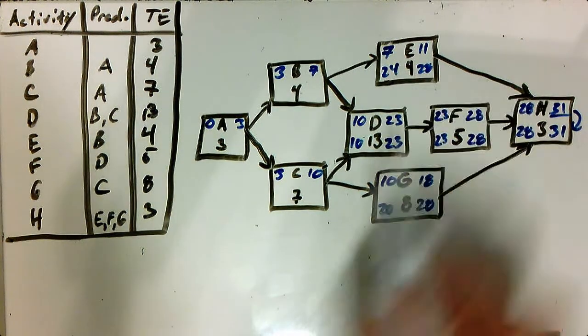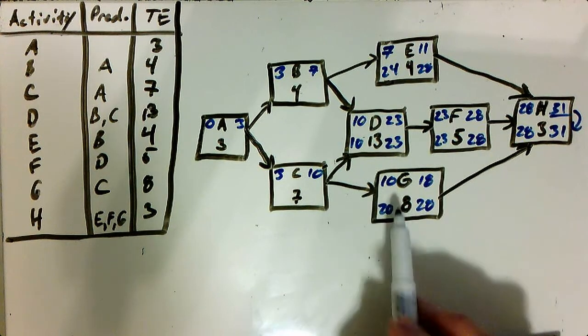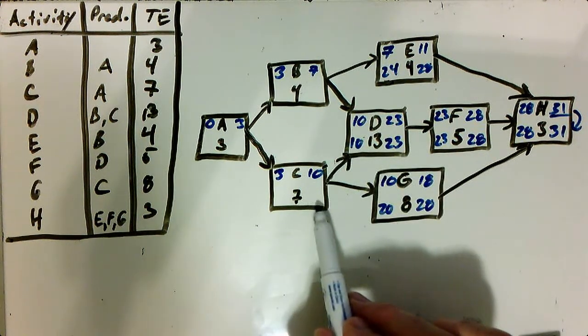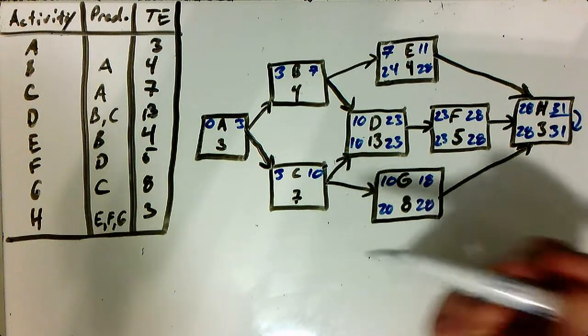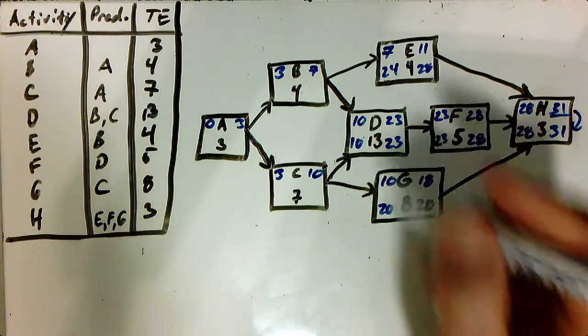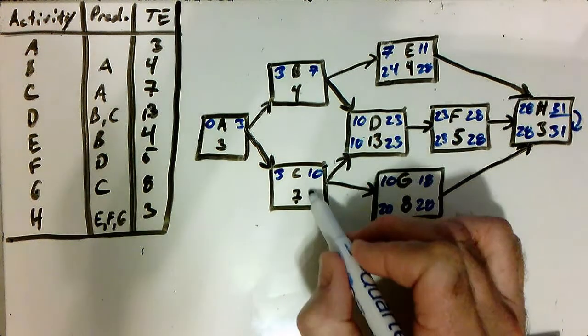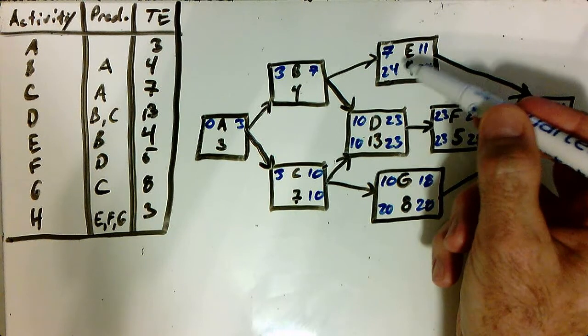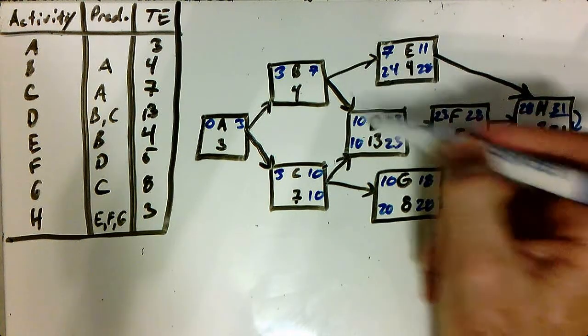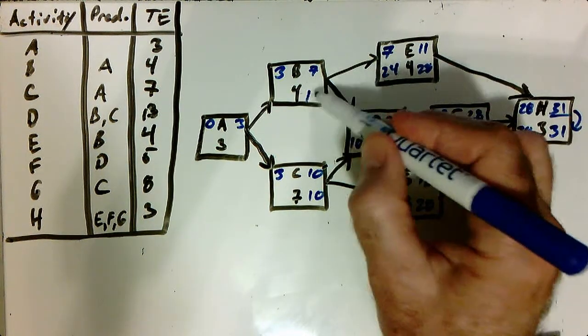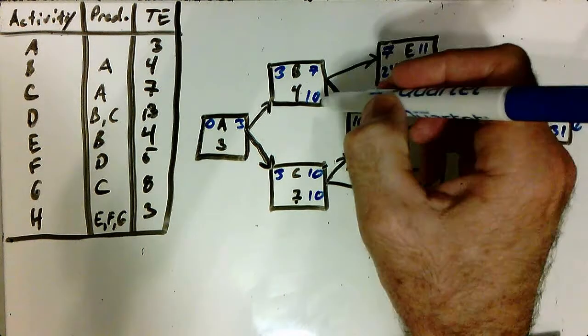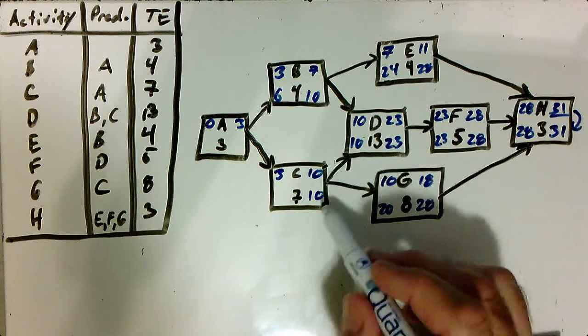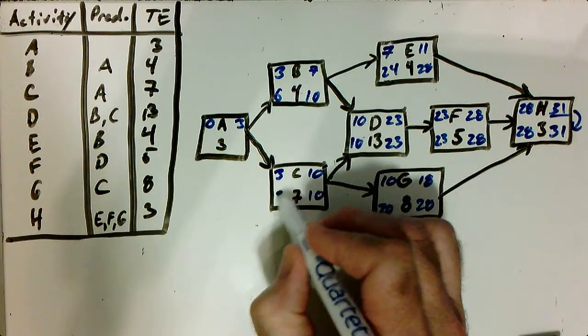Now, this is again where we have to make a choice. Do we take the ten or the twenty to go back to C? Now, here on the backward pass, we choose the small number. So the smallest number is the ten. So we take the ten. Between here, we have twenty-four and ten. So again, we take ten. Ten minus four is six. Ten minus seven is three.